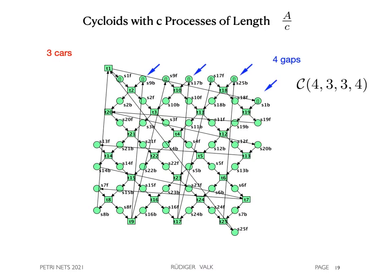In general, cycloids do not have the property of separated processes. Look at this example 4, 3, 3, 4 starting here. We have only one process instead of 3.